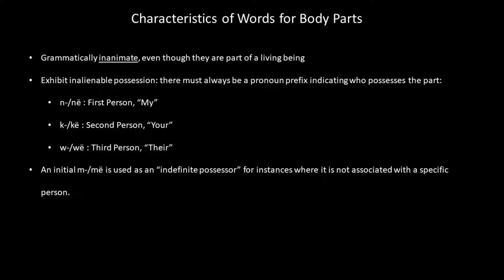Furthermore, they exhibit alienable possession, which means they're always accompanied by a pronoun prefix. We have N for first person (my), K for second person (your), and W for third person (their). There are also some sound changes which we'll see in the examples — sometimes the N becomes a different sound, etc.